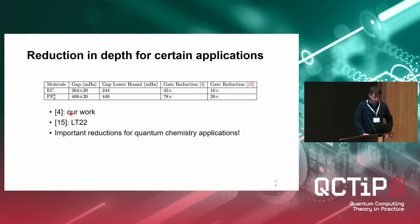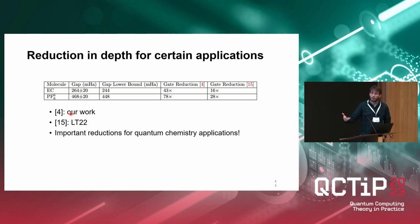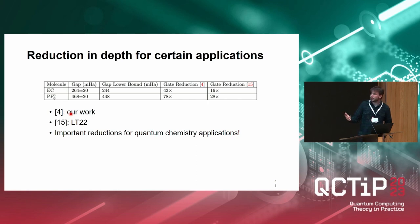We perform numerics for some molecules and see that using our approach — based on the spectral gap — you can reduce the number of gates required to estimate the ground state energy by 43% or 78%, giving important reductions in the number of gates you need to implement.